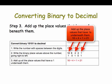Next, add up all the place values that have a 1 underneath them. In this case, the sixteens place, the fours place, and the ones place have 1, so we add up 16 and 4 and 1 and that gives us 21.